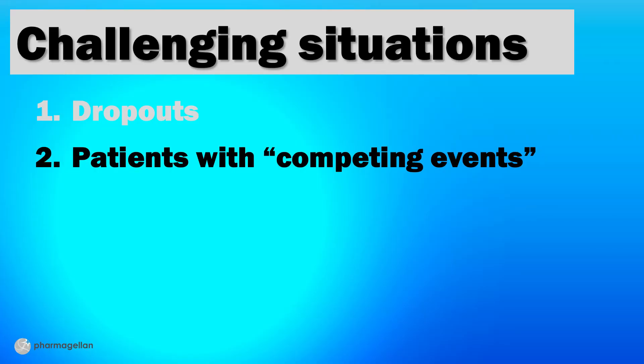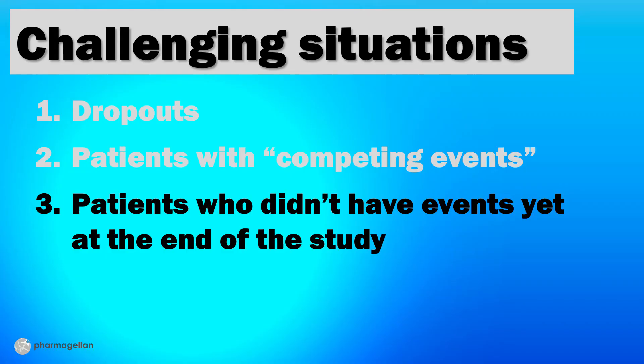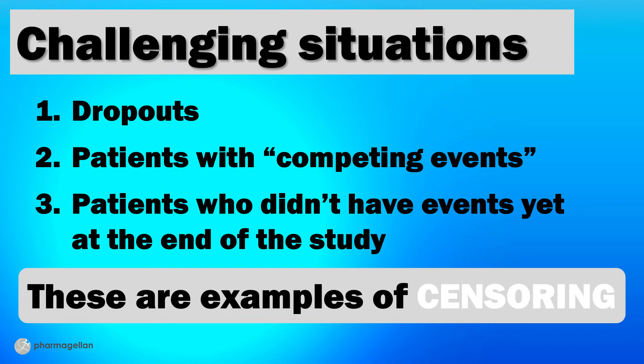Second are the patients who had what's called a competing event. About 2% of patients in Reduce-IT died from some other cause, like cancer or a car accident. They didn't have a heart attack or stroke, but like the dropouts, they might have had one if they'd been in the study longer. The third group of problematic patients has to do with the fact that at the end of a trial, not every remaining patient was in the study for the same amount of time. Reduce-IT enrolled patients from late 2011 to 2016, and the primary analysis was conducted in mid-2018. That means some patients had been observed for over six years, but others had been studied for only about two years. Obviously, it's not fair to consider the second group event-free to the same extent. These are all examples of censoring that leave us a bit in limbo — all we know for sure about those censored patients is that there was some period of time during which they were event-free.